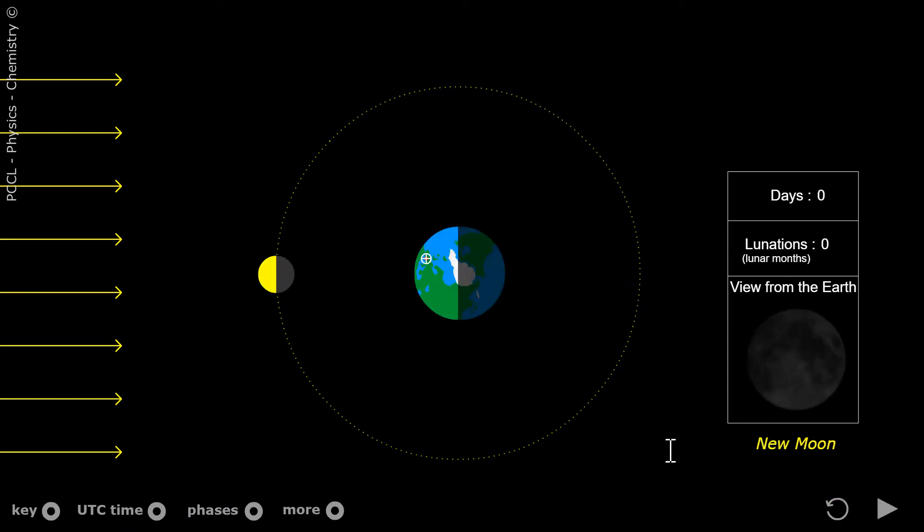So if I start with this position, the sun lights up the far side of the moon. From Earth we cannot see it. If I run the animation, I see a shape here that increases in size. It is the moon seen from Earth.